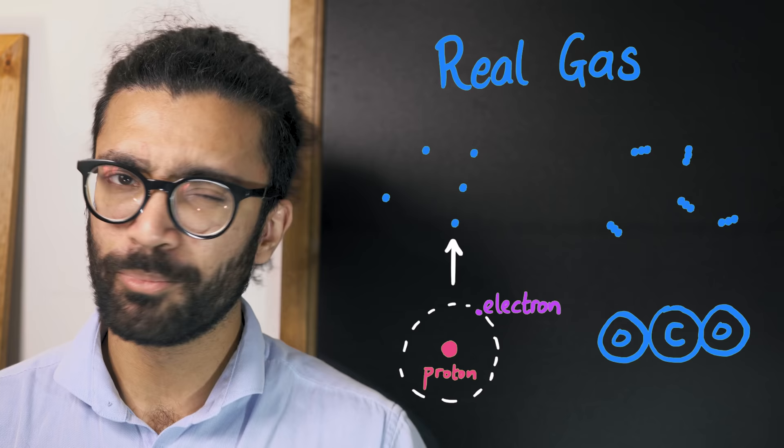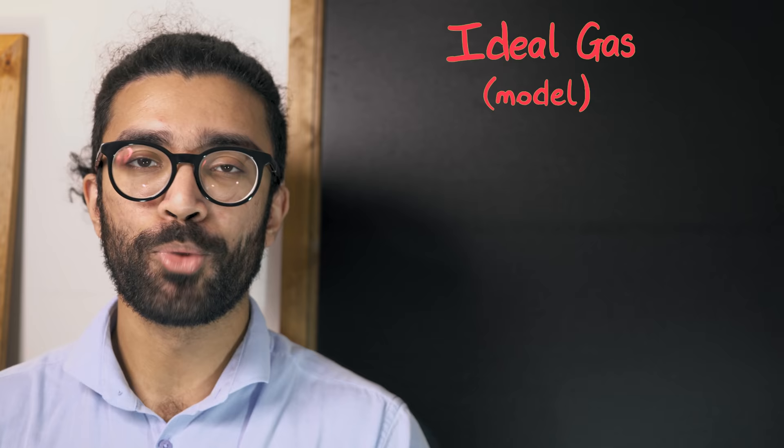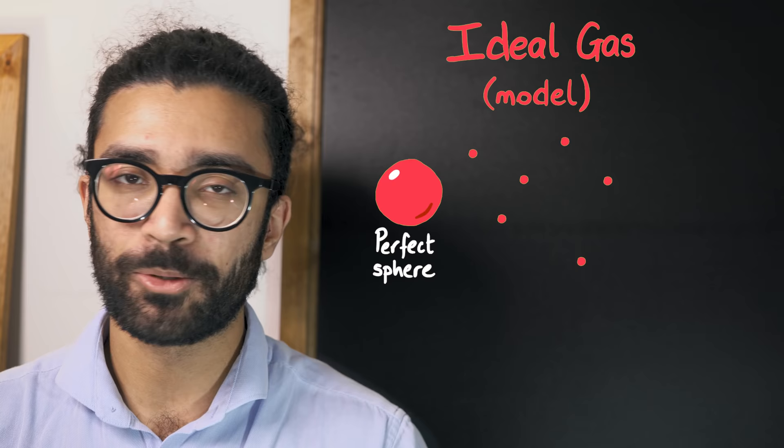The point is though that an ideal gas, the model that physicists use, assumes that these particles are very tiny and they're perfectly spherical, and also that they bounce off each other in an elastic way, without losing any energy.